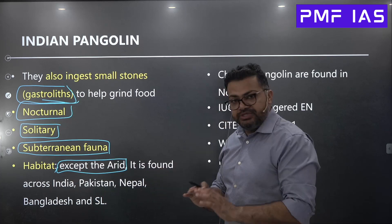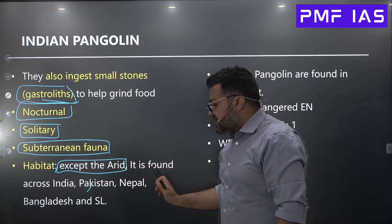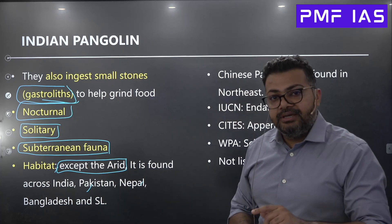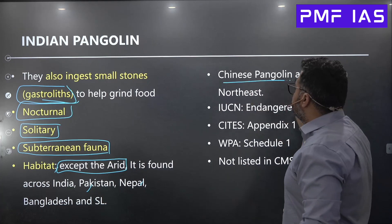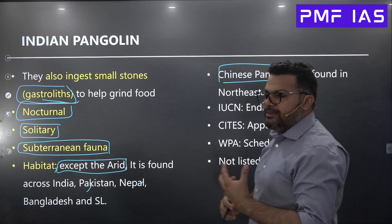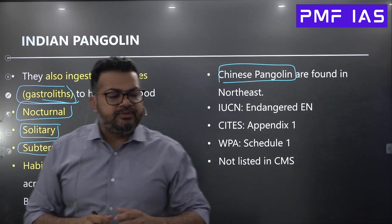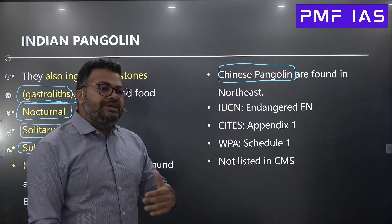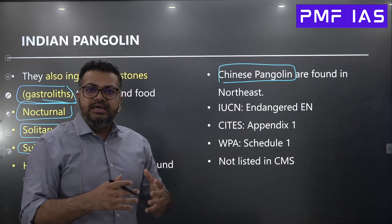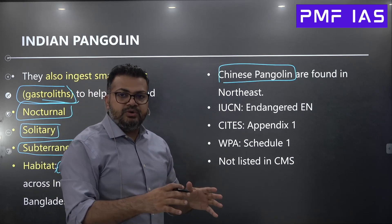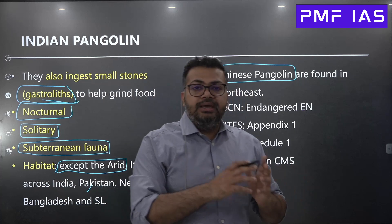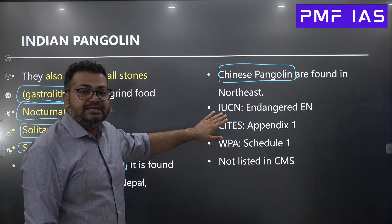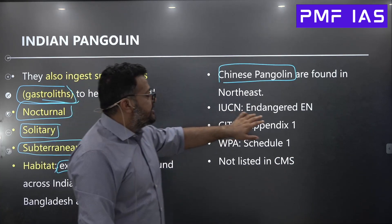The Indian pangolin's habitat is found across India except in the dry areas of the country. It is also found in Pakistan, Nepal, Bangladesh, and Sri Lanka. In India, we also have Chinese pangolins found in the northeast part of the country — they are a little darker, reflecting the type of soil there. So if UPSC ever asks about the distribution of pangolins, remember that pangolins are found across the South Asian subcontinent, and India also provides habitat for Chinese pangolins.